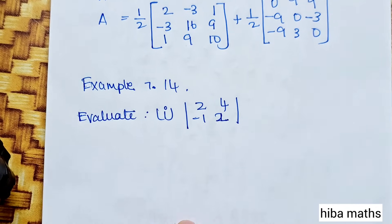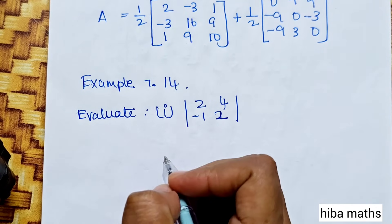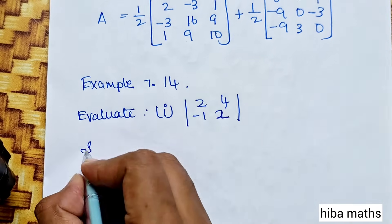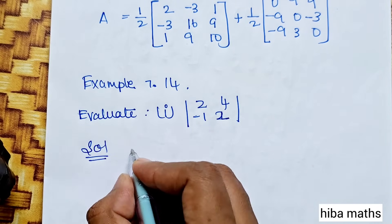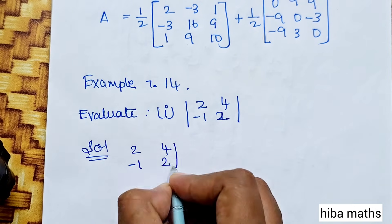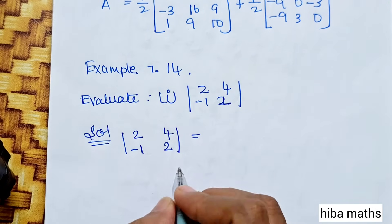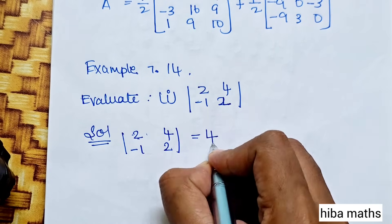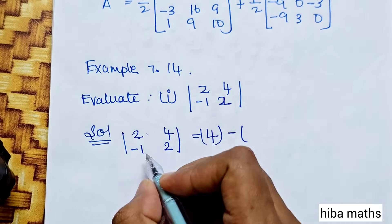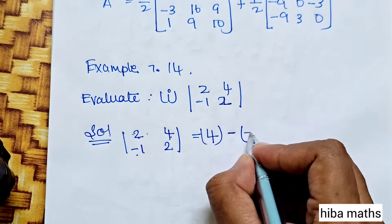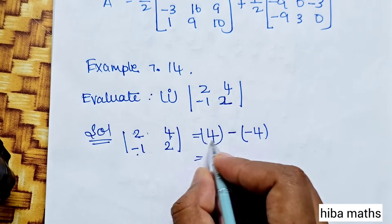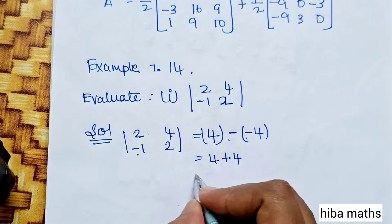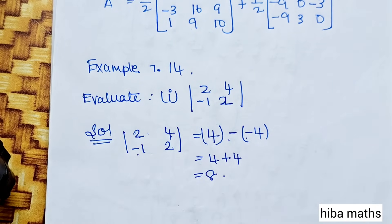Next, Example 7.14: evaluate 2 by 2 determinants. First subdivision: matrix [2, 4; -1, 2]. Evaluate: 2 into 2 equals 4, minus (-1 into 4) equals minus 4. So 4 plus 4 equals 8. The answer is 8.